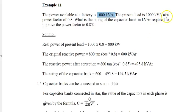Example 11: The power available at a factory is 1000 kVA. The present load is 1000 kVA at power factor 0.8. What is the rating of the capacitor bank in kVAR required to improve the power factor to 0.85? This time we are given kVA, so I need to calculate the real power, which is 800 kW. The original reactive power is 800 tangent cos inverse 0.8, that's 600 kVAR. The reactive power after correction is 800 tangent cos inverse 0.85, which gives 495.8. So the difference is 600 minus 495.8, which equals 104.2 kVAR.